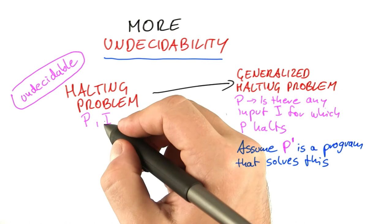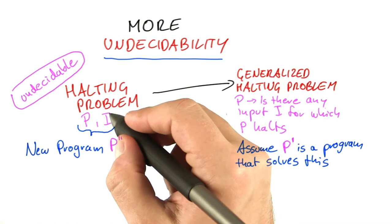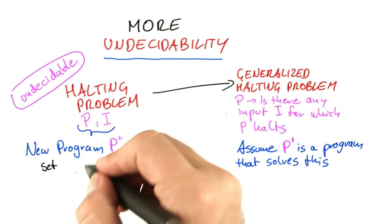So we have the program and the input and now we construct a new program from that. That program is actually quite easy. We just make the input here part of the program code. So in a kind of pseudocode writing here, the first line of that program P'